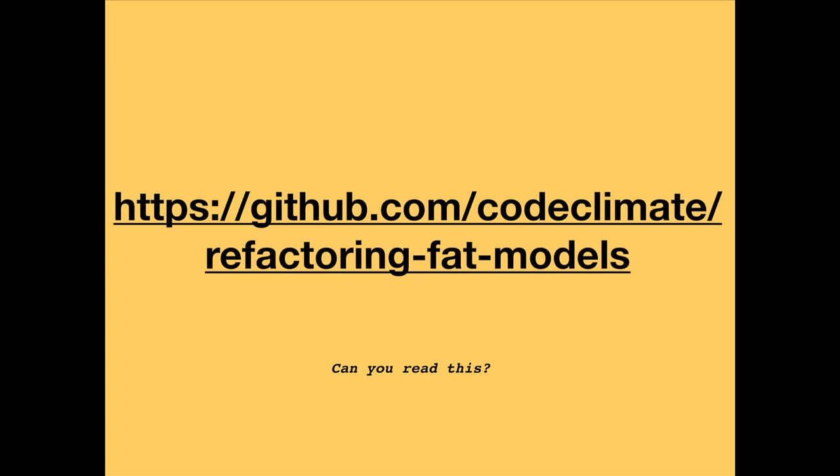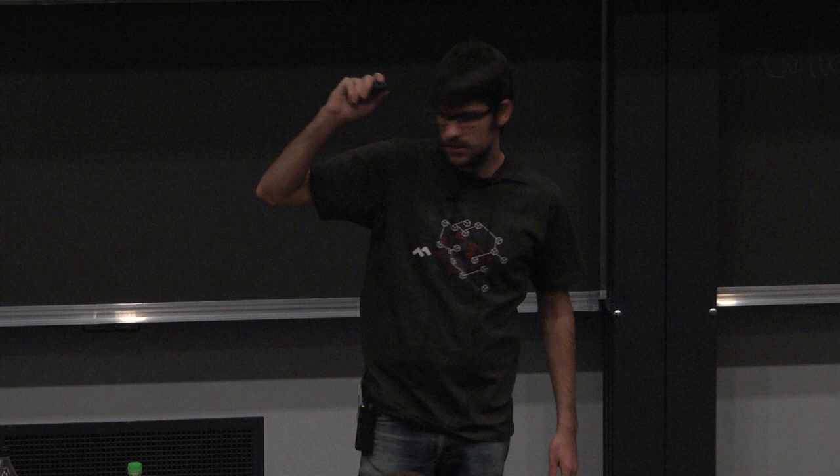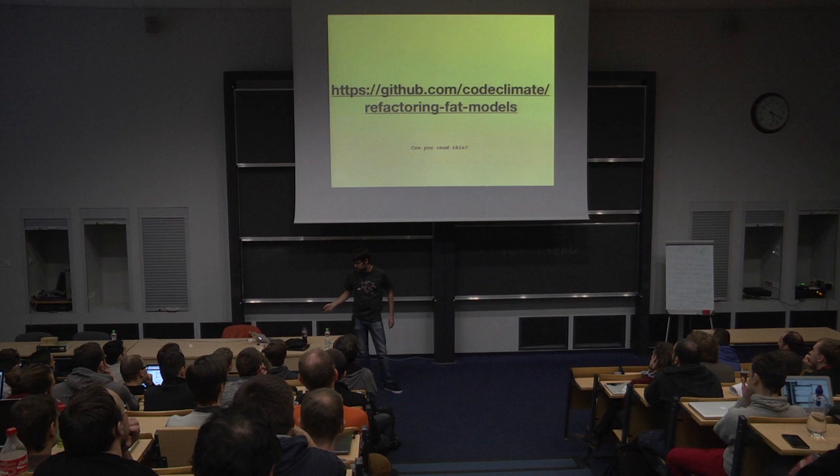So if you can read the line at the bottom that says, can you read this, then you'll be able to read the code. If you can't, go to that URL, and you'll be able to get the code samples. It's github.com/codeclimate, and refactoring fat models will be like the first repo.